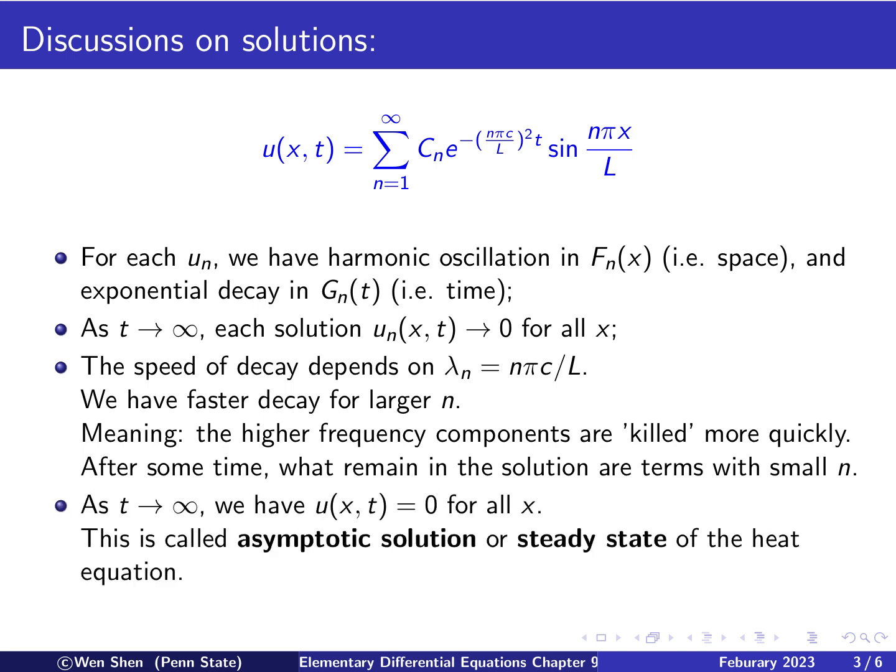And the last observation is the behavior of the solution as time goes to infinity. Here we see that every term of un go to 0 for all n, so we're just adding up all 0s. So therefore, the solution will just be 0 for all x. So this solution here, when t goes to infinity, the behavior of u is called the asymptotic solution. And then eventually, it becomes something that is stable in time, that doesn't change anymore. So the solution will not contain t terms. So therefore, this is also called the steady state of the heat equation.